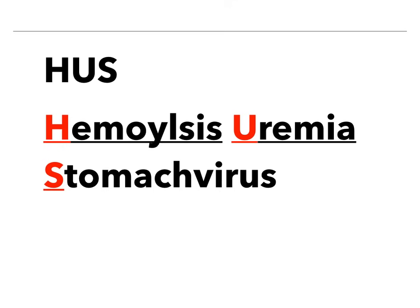The way I remember HUS is: hemolysis, uremia, stomach virus. Literally, they get a bloody diarrhea with stomach virus-like symptoms, then they get the signs of thrombocytopenia, hemolysis, and uremia. This is very high yield because it connects microbiology with E. coli, and connects physiology with platelet consumption and anemia occurring in the kidney. This shows up on every single Step 1 exam.